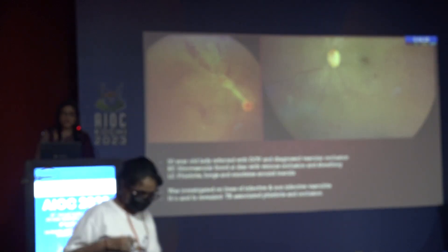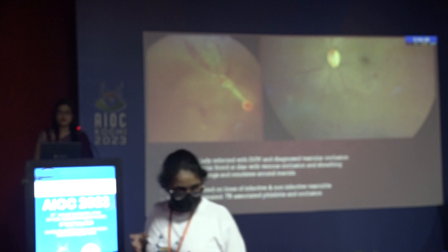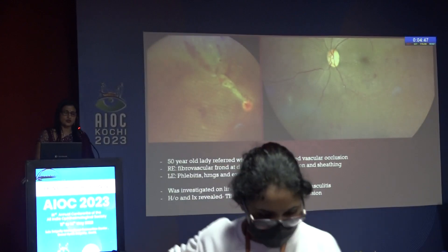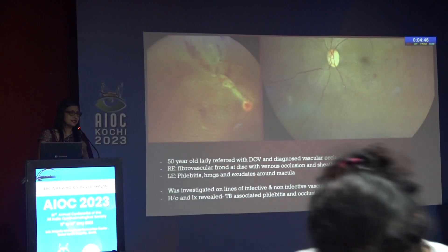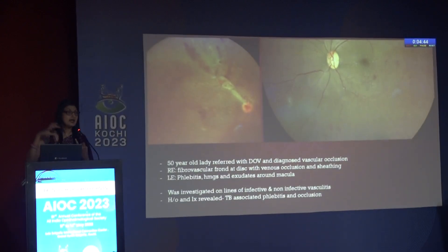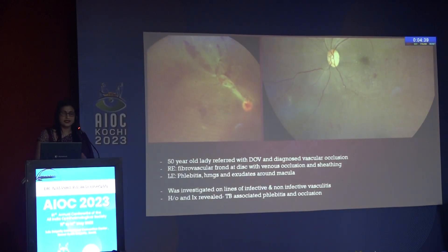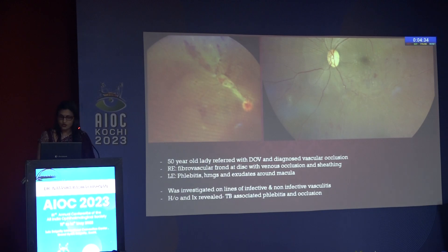For clues to etiology, look for evidence of vasculitis: disc edema, vasculitis in other quadrants — these suggest an inflammatory pathology. You also need to take a proper history about any systemic causes.